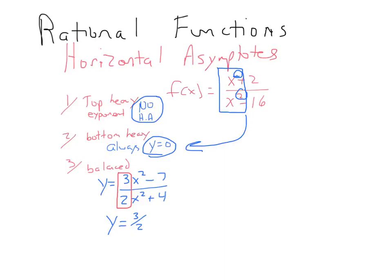So the three conditions: top-heavy, no horizontal asymptote exists. Bottom-heavy is always y equals zero. And balanced is the one where you consider the lead coefficients of the terms, and that is exactly your horizontal asymptote.